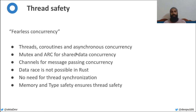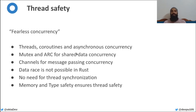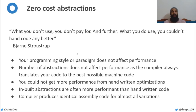Rust also guarantees thread safety using similar concepts used for memory safety — the ownership mechanism and borrow checker — along with standard library features like channels, mutex, and Arc. The ownership mechanism makes it impossible to cause accidental data races from a shared state, making us confident to focus on the code and let the compiler worry about shared state between threads.